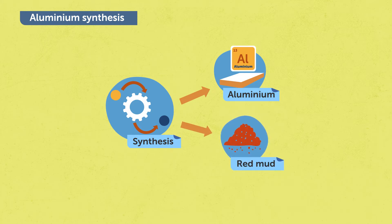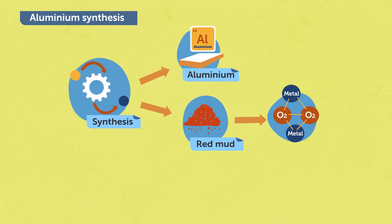Red mud is a reddish slurry that contains a complex mixture of different oxides, traces of heavy and precious metals.